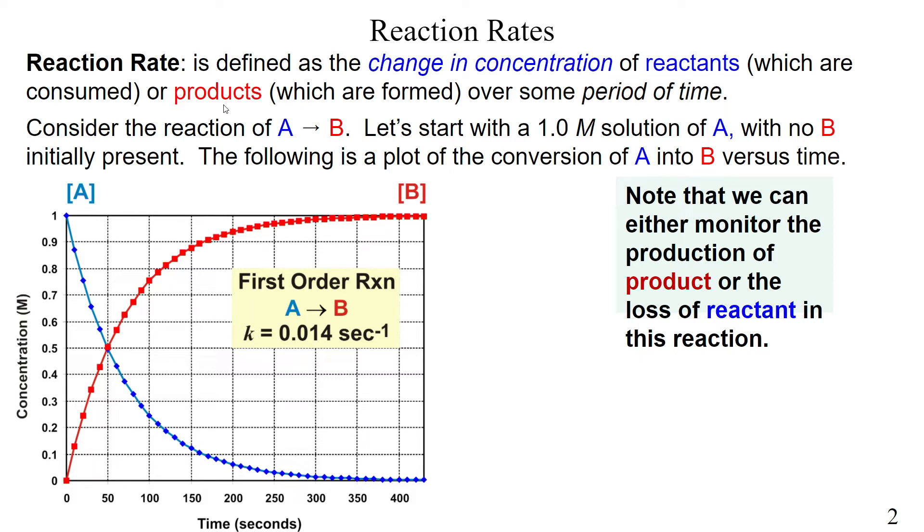So let's look at this reaction down here to consider this. We got A forming B. And let's say we got one molar solution. So if you remember, molar is moles over liters. That's my big M there. So one molar solution of A with no B present. No B is present in this reaction. And then I got a plot that's going to tell us what's going to happen here.